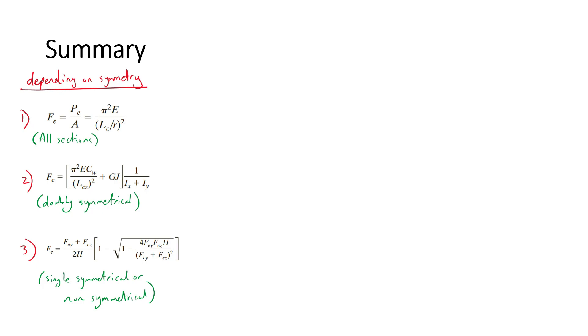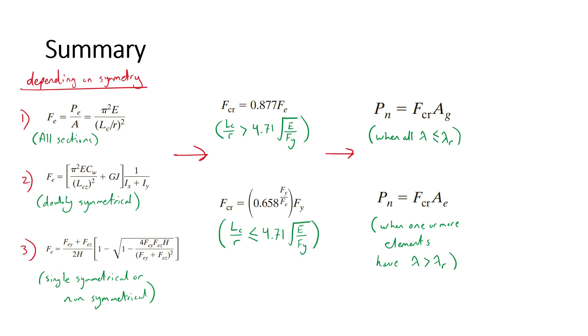To summarize, we first have to compute FE for the section depending on the symmetry and the lowest value of applicable FE. Next, we compute FCR based on the slenderness ratio of the section to determine whether the column will fail elastically or inelastically. Afterwards, we determine if any of the elements of the section is slender to ensure local stability. And finally, we ensure that the sum of factored loads is less than the design compressive strength.